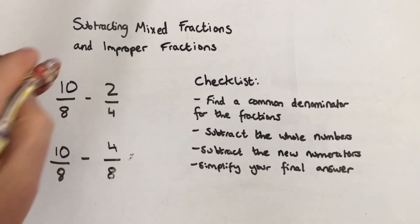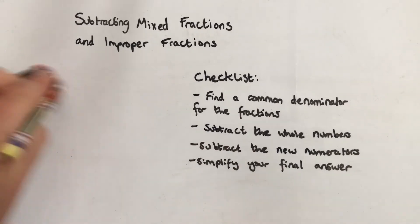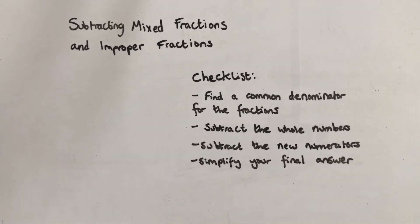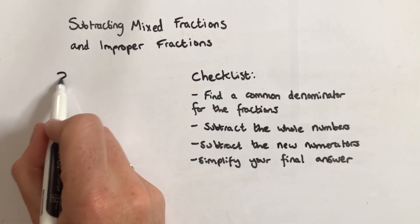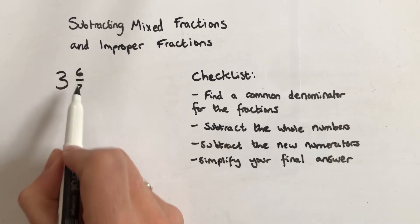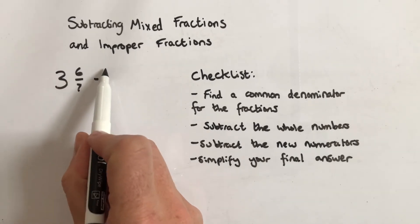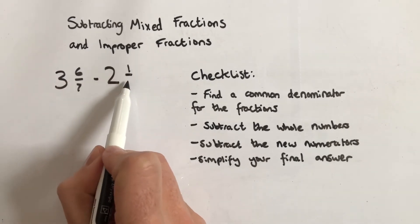We're next going to have a look at mixed fractions, so that means whole numbers as well as fractions are going to be involved. So I'm going to start with the whole number of 3 and 6 sevenths, take away the whole number of 2 and one third.